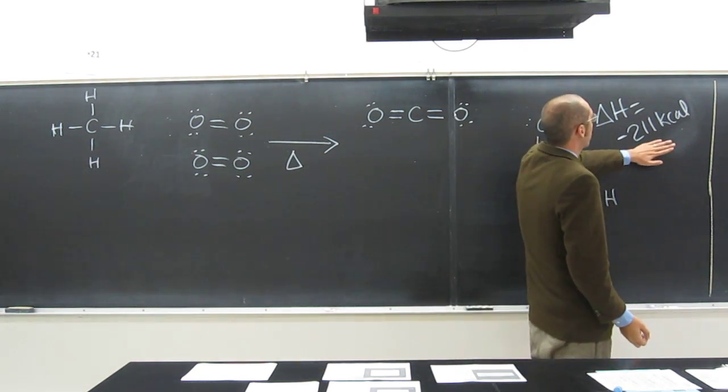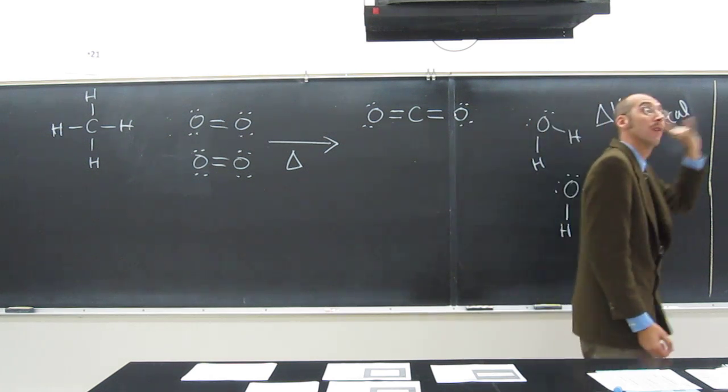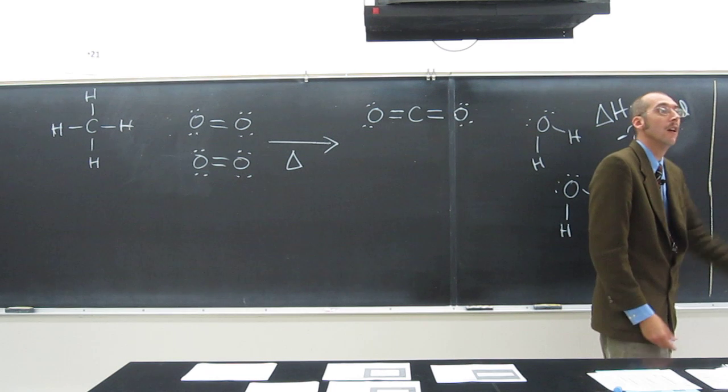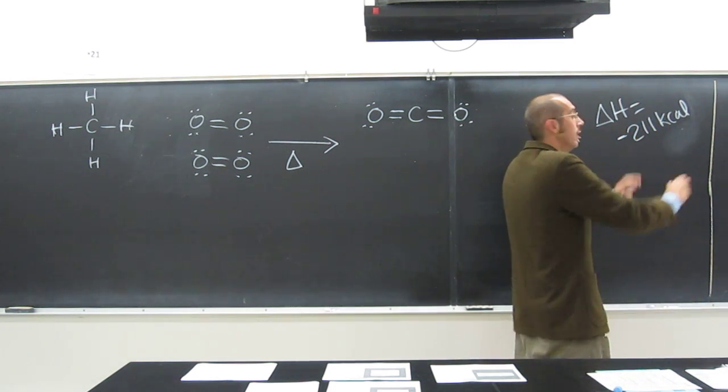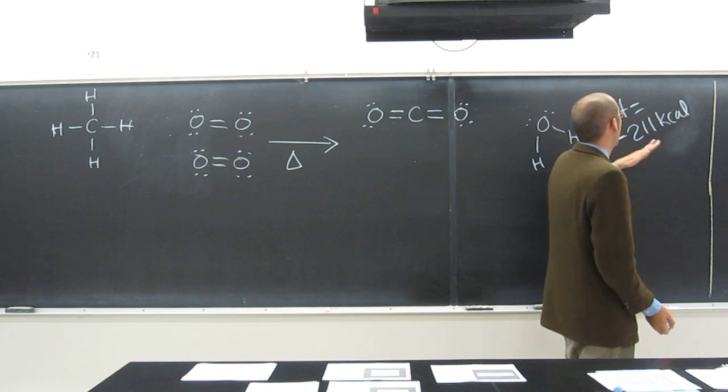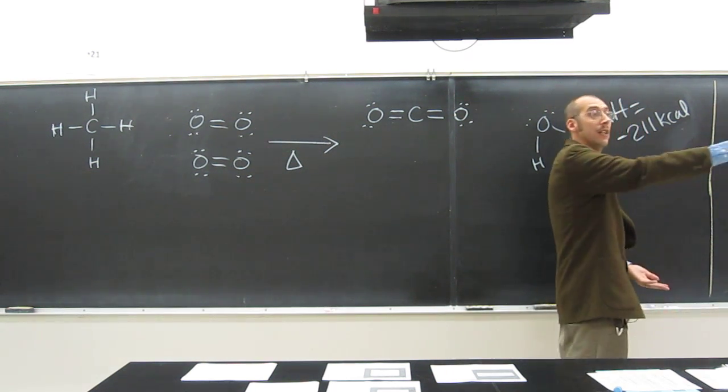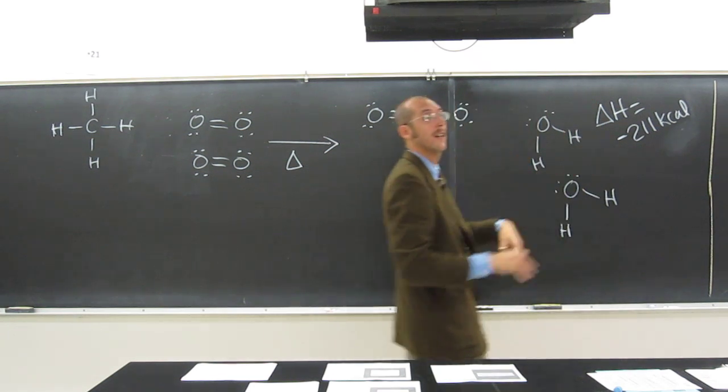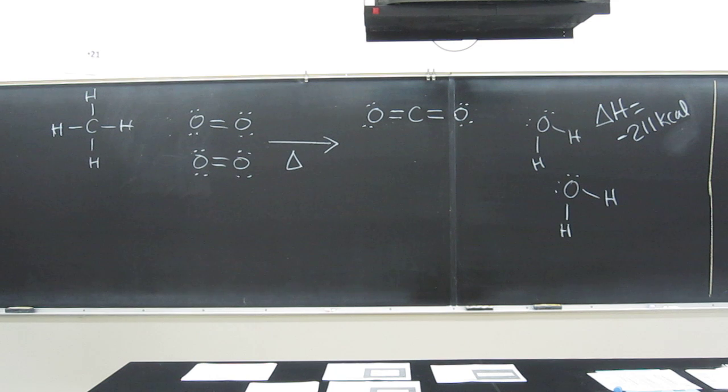So what that means is that it produced that much energy. When it produces energy, the energy is a product. When it produces energy, that means delta H is negative, right? Because energy is being released, so it's getting hot. Recall that from our last discussion. That was from last discussion.